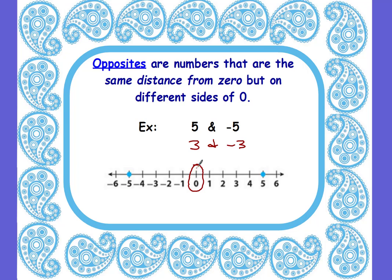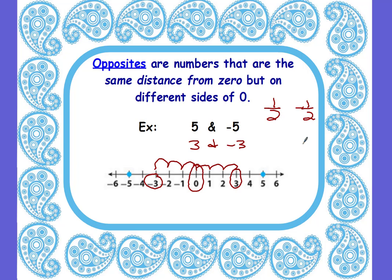The same is true for three and negative three. We start at zero, move three units to the right — that's our positive three. If we move three units to the left, we land at negative three. So basically, opposites are a positive number and a negative number: three and negative three, five and negative five, one hundred and negative one hundred, five thousand twelve and negative five thousand twelve. It also works for fractions and decimals — the opposite of one half is negative one half, and the opposite of six tenths is negative six tenths.